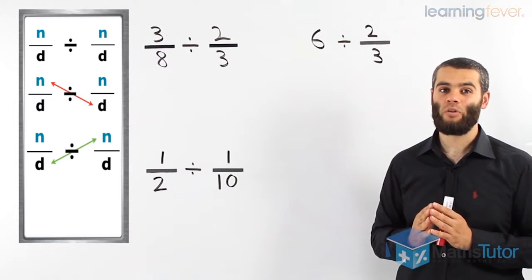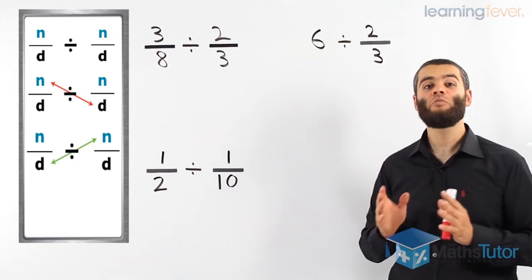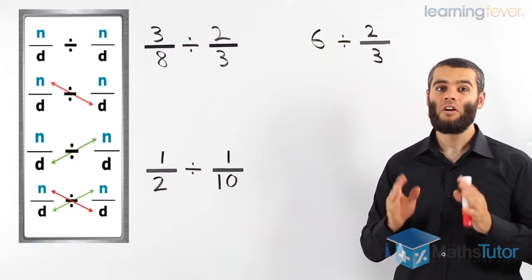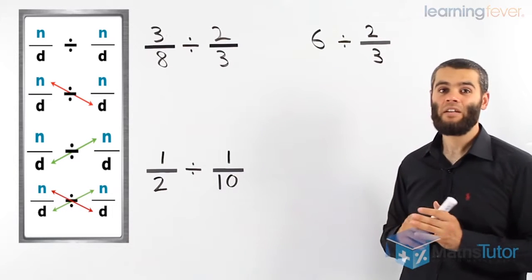We have to follow this order. So basically what we're doing is we are cross-multiplying. Let's see how it's done in practice.